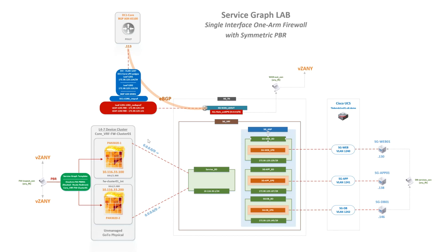We have two Palo Alto 3020 firewalls. Even though I'm showing them as a cluster, they are independent standalone firewalls. In my lab they're plugged into the same leaf switch, but I could easily put one in a different data center — maybe with multipod — and have them participate in the same L4-L7 device cluster. These firewalls do not share session state; they're not in an HA pair, although HA firewalls could be added. I leverage Panorama to push the access rule policy to both so they're configured similarly.